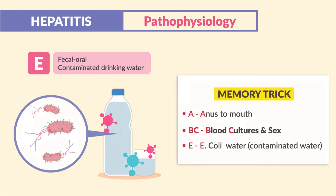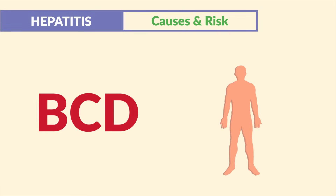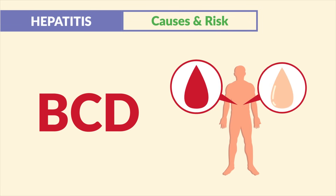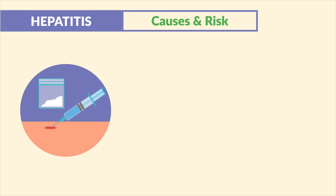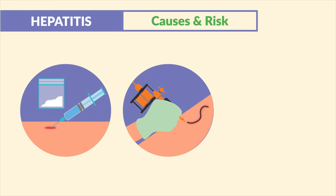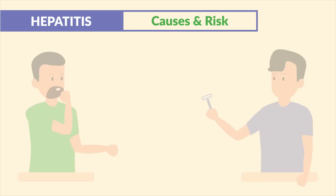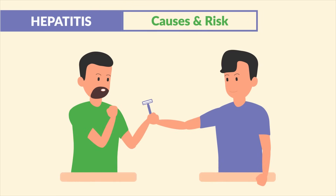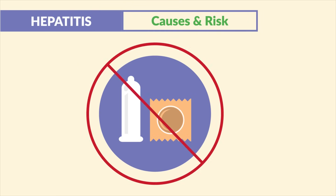In terms of causes and risk factors for hepatitis B, C, and D, transmission is through blood and body fluids. This includes IV drug use, tattoos, body piercings, sharing razors, and unprotected sex.